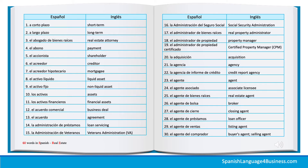7. El acreedor hipotecario — Mortgagee. 8. El activo líquido — Liquid asset. 9. El activo fijo — Non-liquid asset. 10. Los activos — Assets. 11. Los activos financieros — Financial assets. 12. El acuerdo comercial — Business deal. 13. El acuerdo — Agreement.